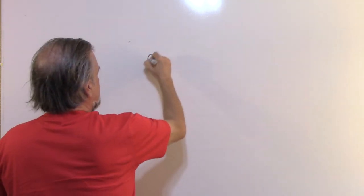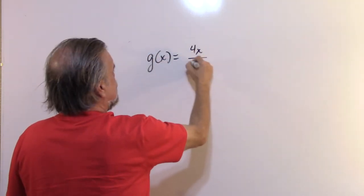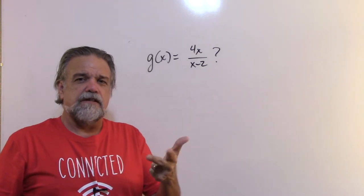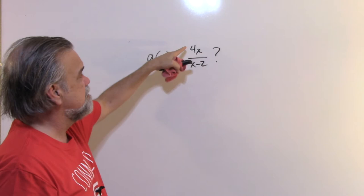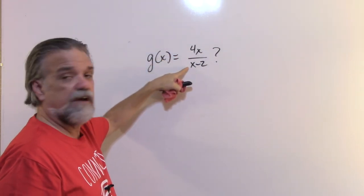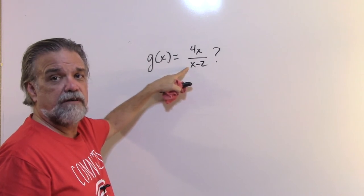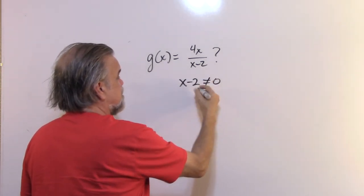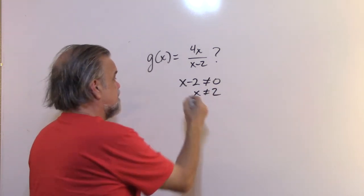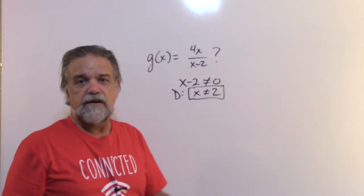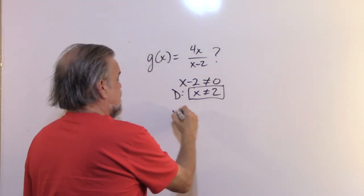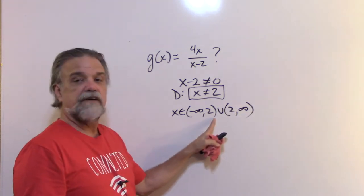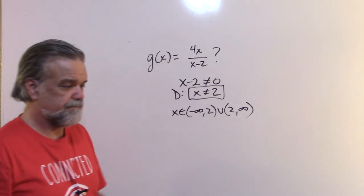What is the domain of g(x) = 4x / (x - 2)? Think about the rules: we can't divide by zero, so the denominator x - 2 cannot be zero. Therefore x - 2 ≠ 0, which means x ≠ 2. In interval notation, the domain is (-∞, 2) ∪ (2, ∞) — parentheses on both sides since 2 is excluded.